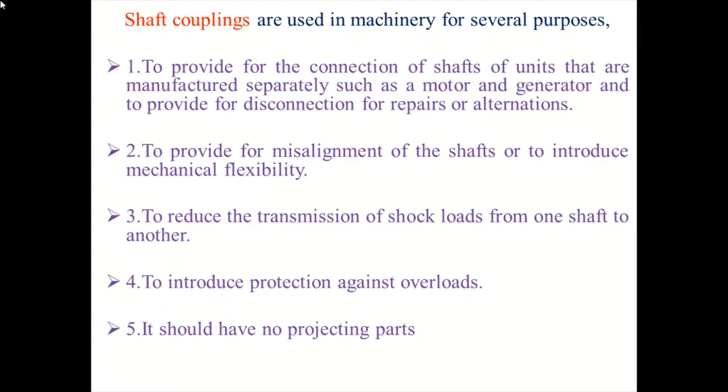Shaft couplings are used in machinery for several purposes. To provide for connection of shafts of units that are manufactured separately such as motor and generator, and to provide disconnection for repairs or alterations. To provide for misalignment of shafts or to introduce mechanical flexibility. To reduce the transmission of shock loads from one shaft to another. To introduce protection against overloads.